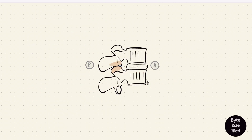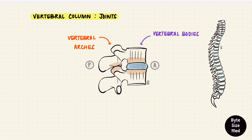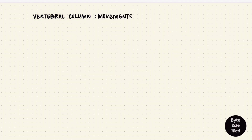Joints are formed between bones, so between the vertebrae there are joints as well — between the vertebral bodies and between the vertebral arches. These joints are how movements happen. The movement between individual vertebrae is actually very small, but it aggregates over the whole column for big movements to happen.